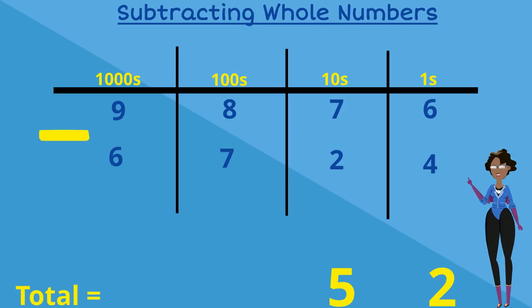Next we move on to our hundreds column where we have eight take away seven, which is equal to one, so we put one in our total space. But then we have a fourth number, a thousands column, so we have nine take away six which gives us three, and we put three in our total space in our thousands column.